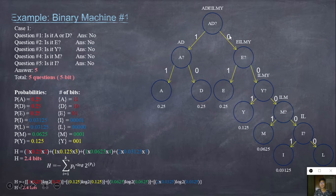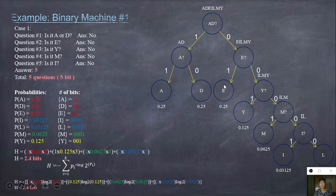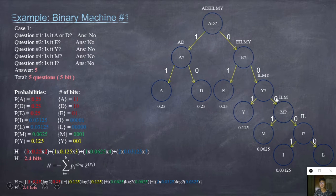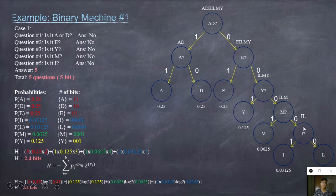Moving to the next part of the binary tree: for the yes branch, it has an outcome of no. Is it A? For yes, we predicted A. For no — is it Y? If yes, we predicted Y. And for no, the answer is M. Is it M? For yes, the answer is M. And for no, the answer is I.